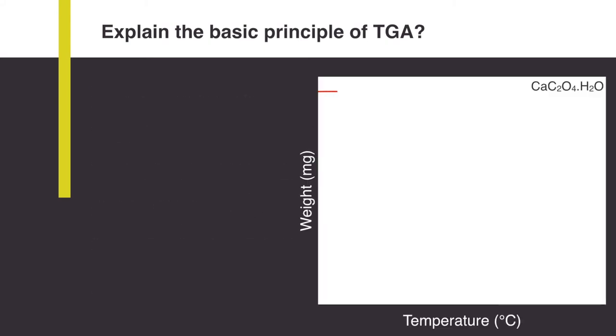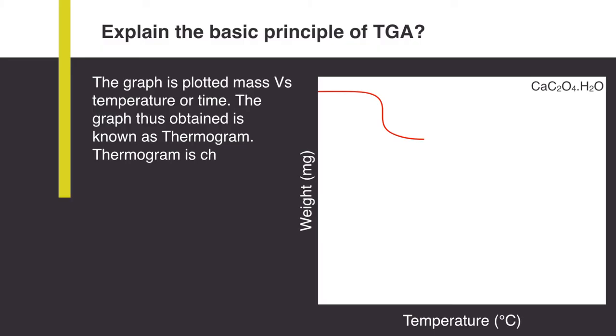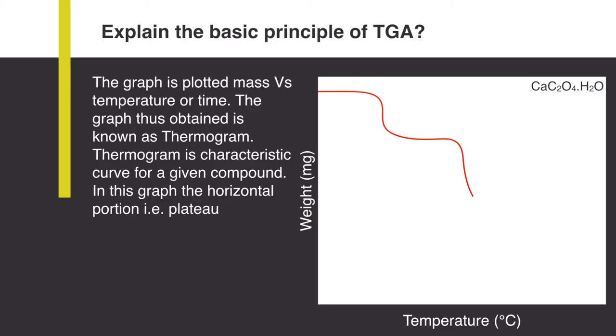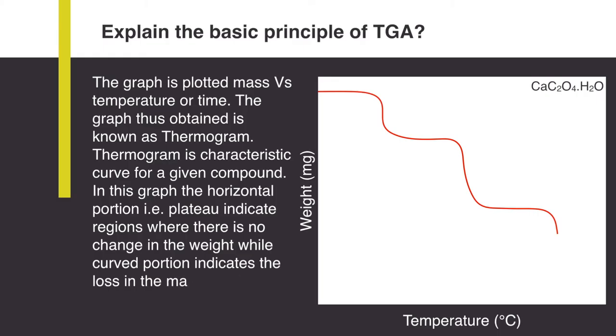The graph of mass versus temperature or time is recorded. The graph thus obtained is known as a thermogram. A thermogram is a characteristic curve for a given compound. In this graph, the horizontal portion or plateau indicates regions where there is no change in weight, while the curved portion indicates loss in mass. The heating temperature varies from ambient to 1500 degrees Celsius.